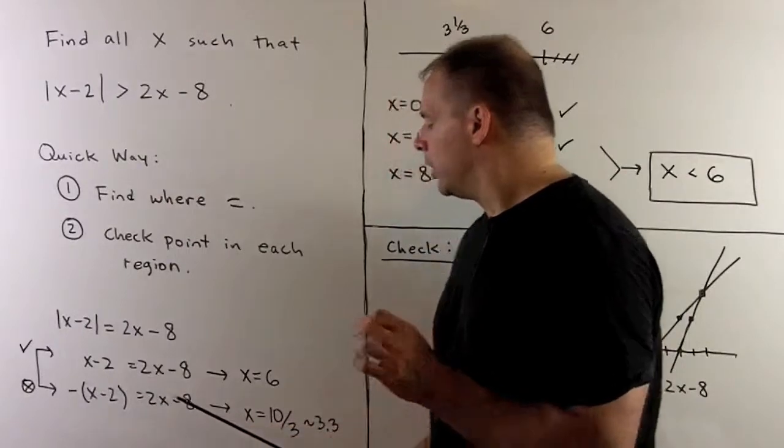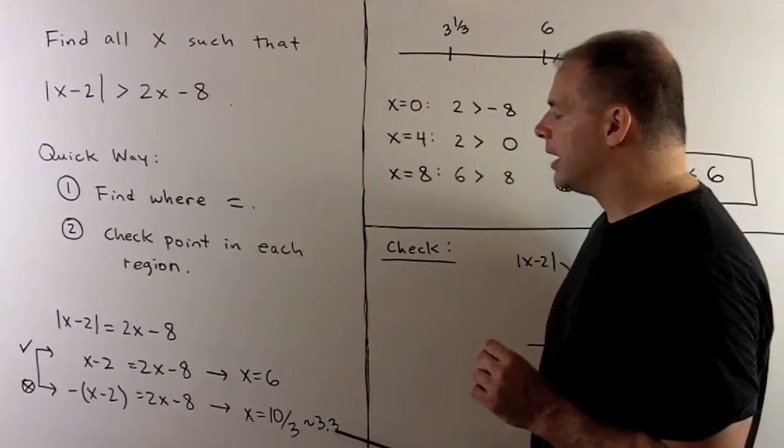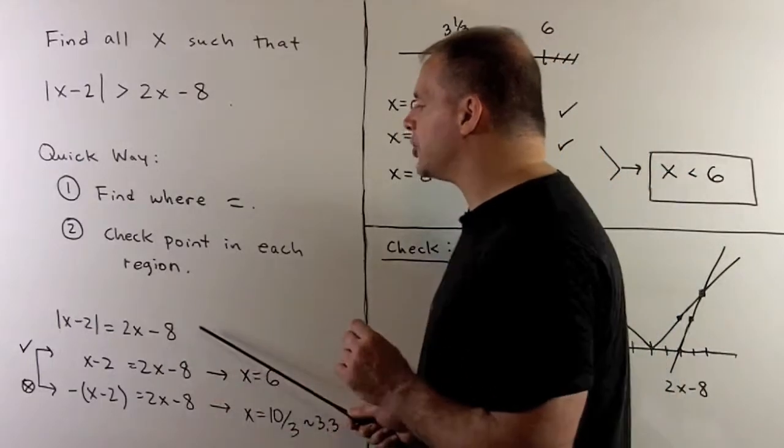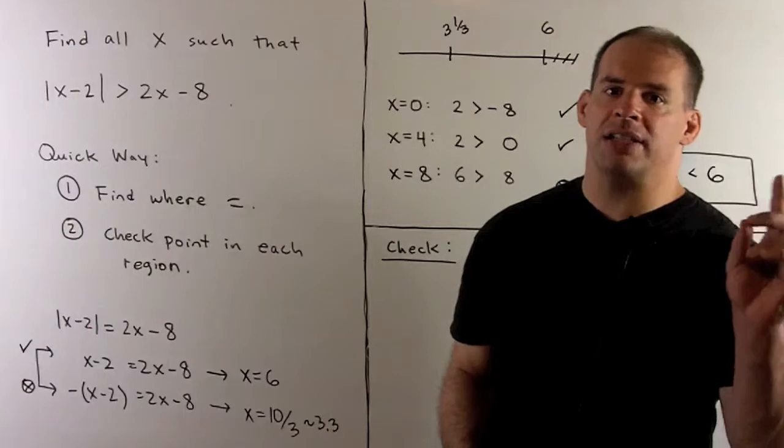For the second equation, we'll get x equal to 10 thirds, so it's roughly 3.3. If I put this back into the original equation, we'll have 4 thirds equals minus 4 thirds, so that's not a solution.